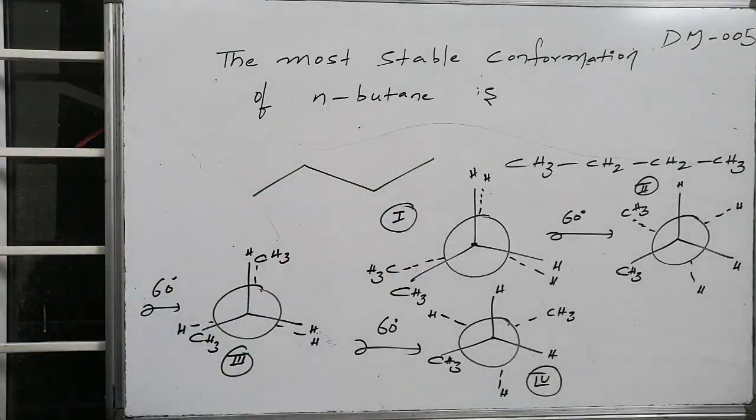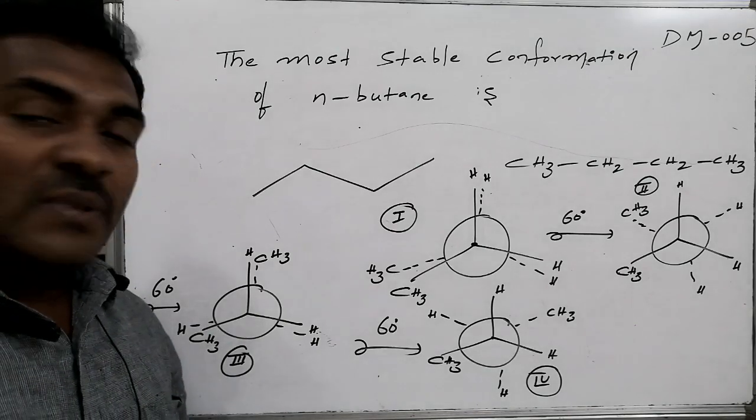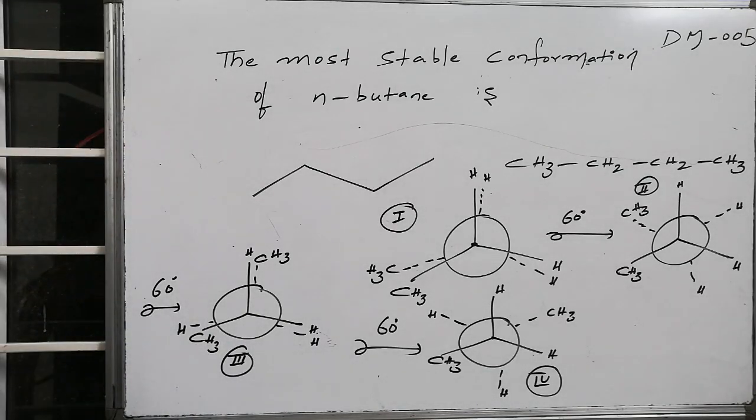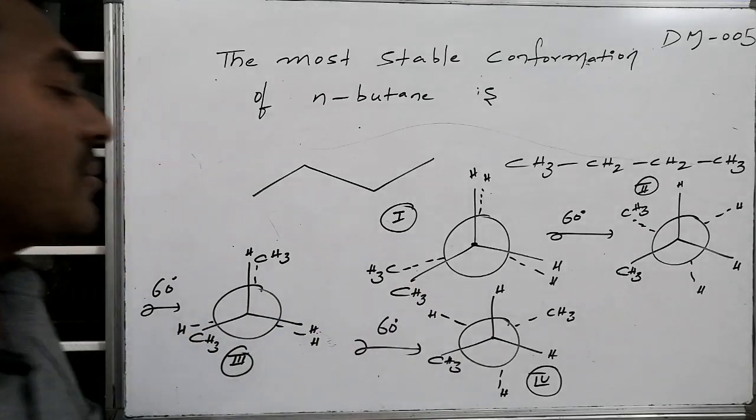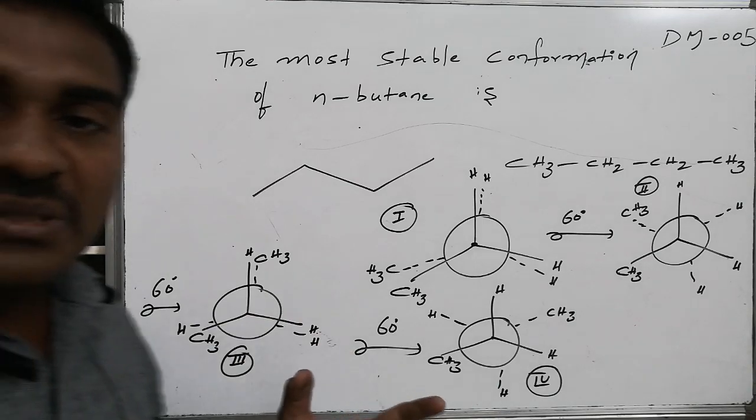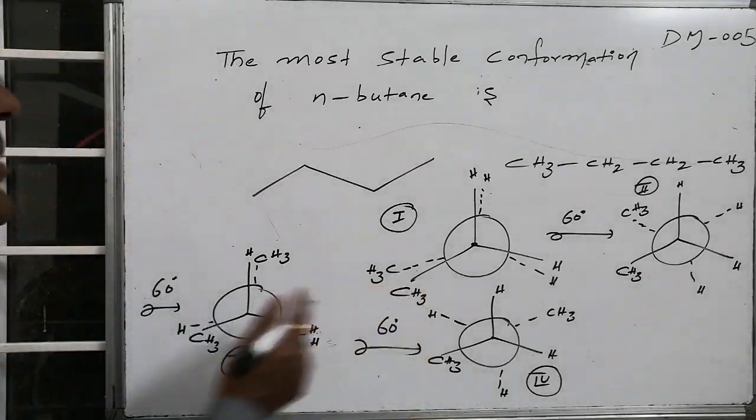In this, nobody is having angle strain, nobody is having steric strain. Yes, some of them are having torsional strain. So therefore here, the most energetic part, most strained and the most energetic part will become 1.